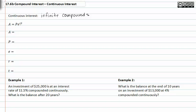Let's look at what each variable represents in this formula. First we have A, which is equal to the final amount. P, which is the present value, and E, which is called Euler's constant.